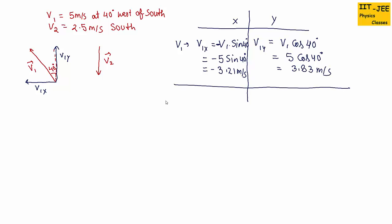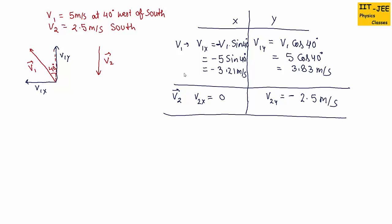Next, for vector v2, which is a vertical vector directed towards south: since south is a negative direction, v2x equals 0 because v2 has no horizontal component, and v2y equals minus 2.5 meters per second.